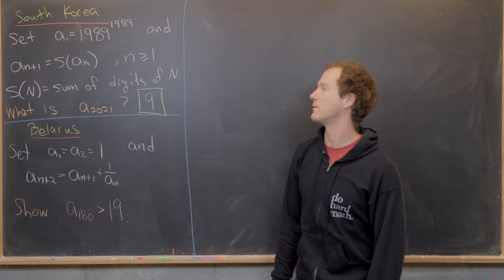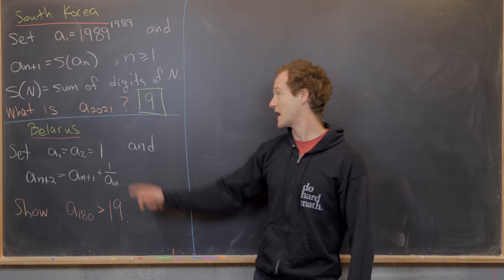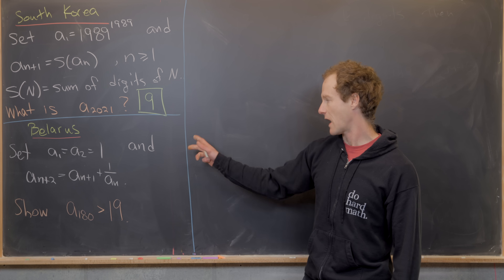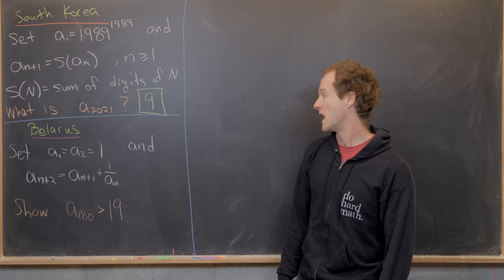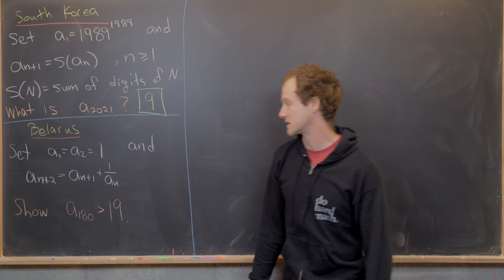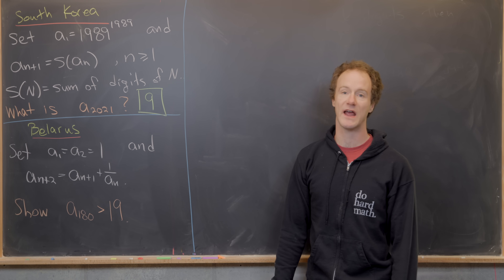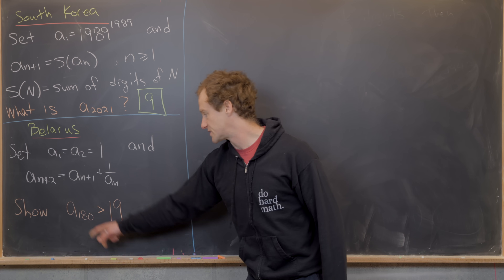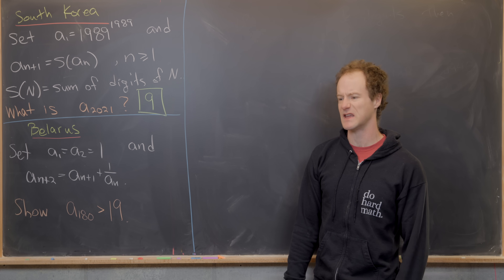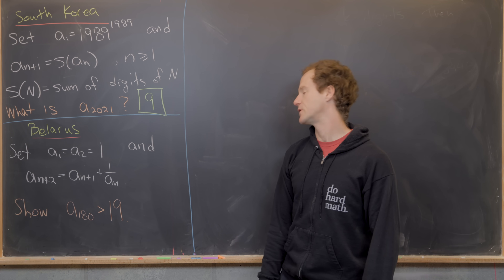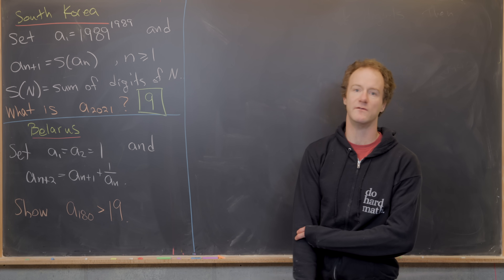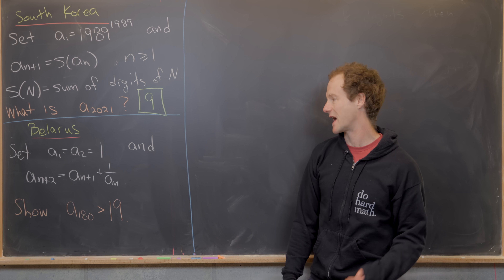We just finished the South Korean problem: the 2021st term of the recursively defined sequence equals 9. Now for the Belarus problem: A₁ = A₂ = 1 and A_{n+2} = A_{n+1} + 1/A_n. Our goal is to show A_{180} > 19. There's a trick at the end, which we'll see when we get there. The first step is to build a recursion that avoids the reciprocal term, which is tricky to handle directly.